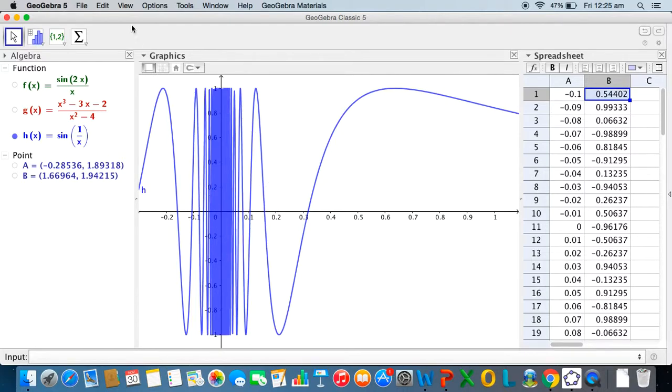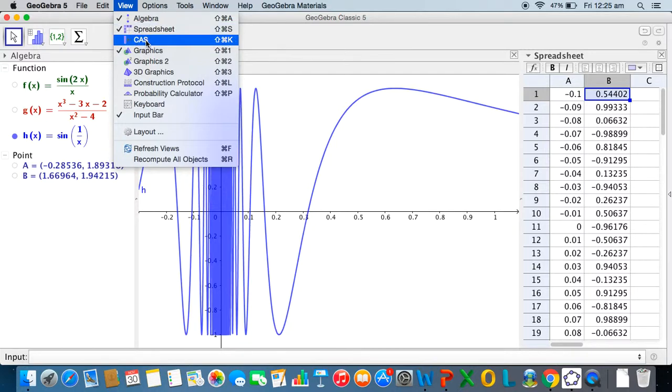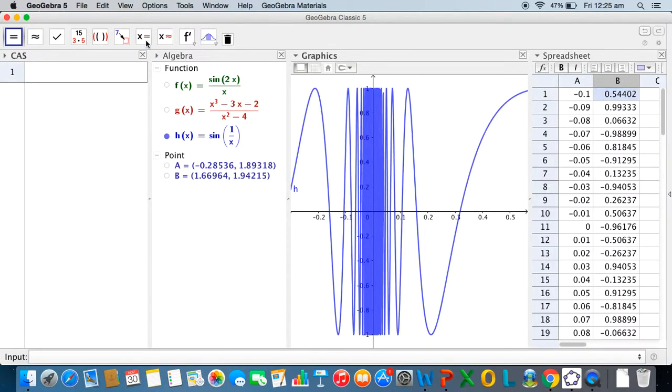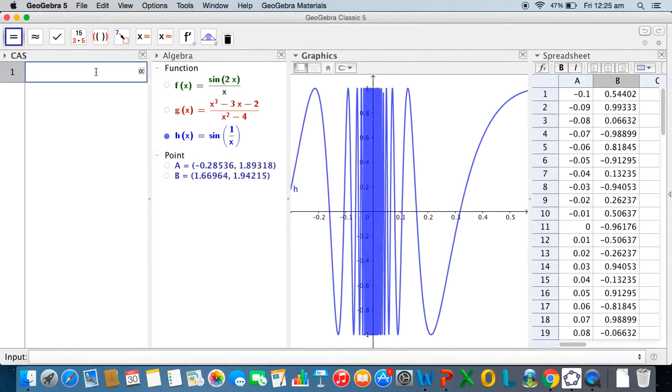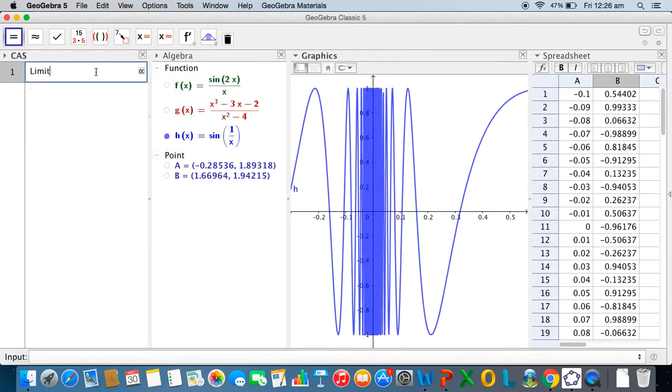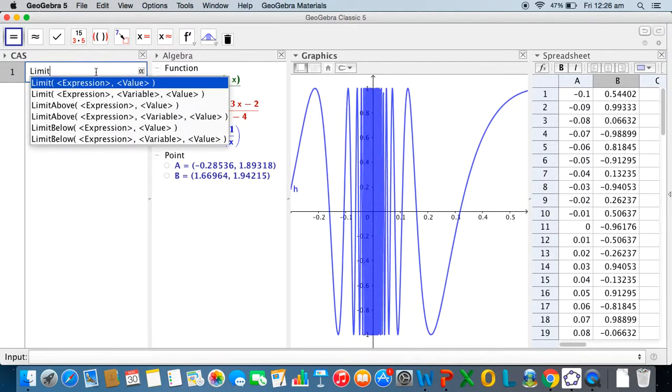Alright so now suppose I again go to view, and this time I call in a CAS window. CAS stands for computer algebra system. This has inbuilt commands which can help us to compute many things, so I can use the limit command. So I'm going to tap on the CAS window here and type limit, and I want the limit of f of x as x approaches 0. And if you press enter, you can see that the function value for sine 2x upon x as x approaches 0 was 2.